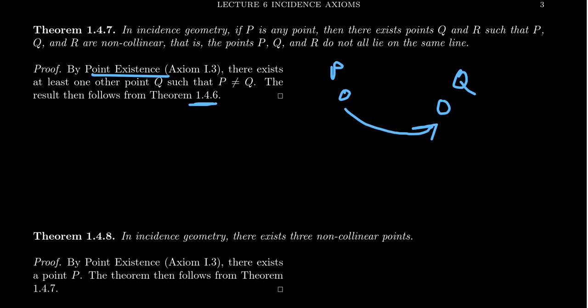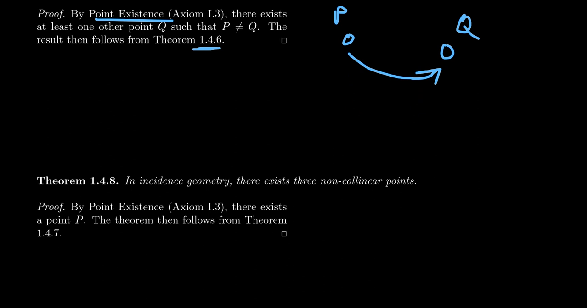Going even one better: the next theorem says there exists a set of three non-collinear points — you don't even need to give me any starting points. So we can always extend any collection of points into a non-collinear set. Note also that any pair of points is always collinear because of line determination, which is why three is important here: if you want a non-collinear set, you need at least three points, and such sets do exist. These previous theorems are not vacuous.